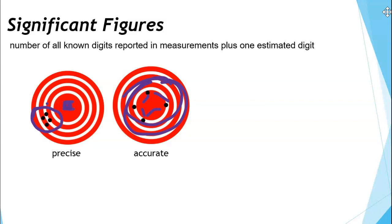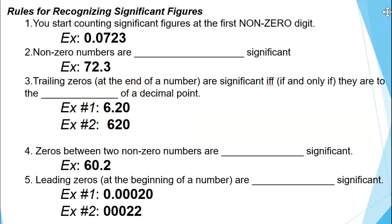There are lots of rules for recognizing if a digit is significant or not. Throughout chemistry class, you will hear me say the words 'significant digit' and 'significant figure' — those two things mean the same thing. Figure, digit — they both mean the same thing, so we can use them interchangeably. We have five rules for recognizing whether a digit is significant.